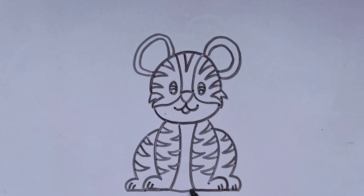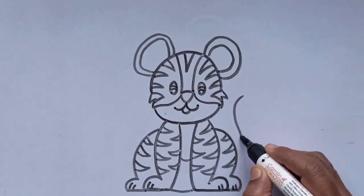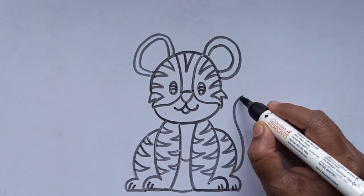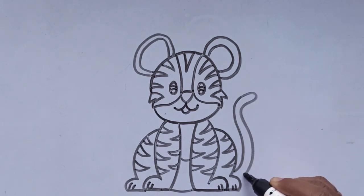Add stomach lines here and complete the drawing by drawing a tail. Many such subspecies are in danger. So we should not hunt them.